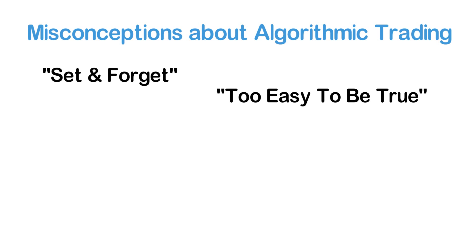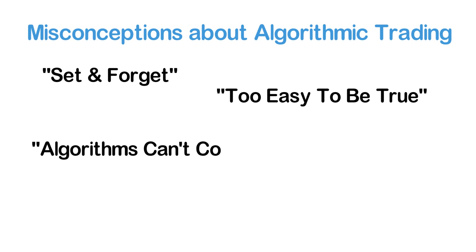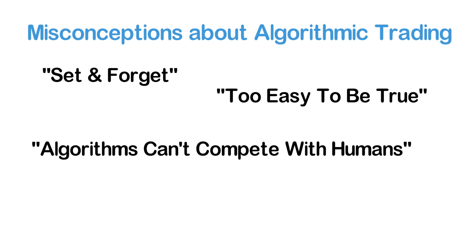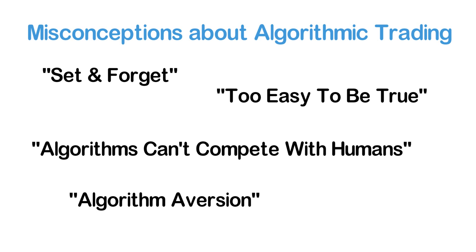The next misunderstanding about systematic vs. discretionary trading is that there is no way that an algorithm could compare against a human trader. Due to rapid technology development, this has gotten better over the past years, but there still exist many people with this algorithm aversion.